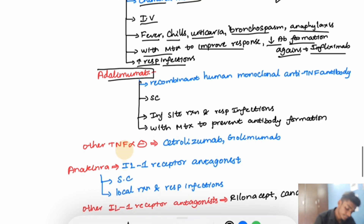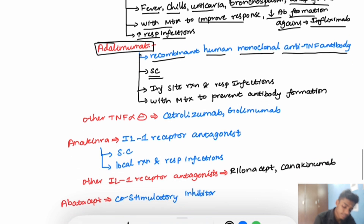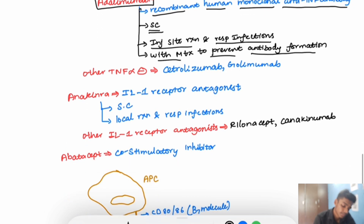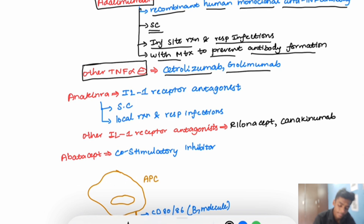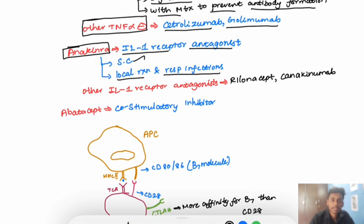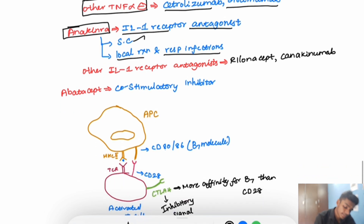Adalimumab is a recombinant human monoclonal anti-TNF antibody given by subcutaneous route. Adverse effects include injection site reactions and respiratory infections. Methotrexate is used alongside to prevent antibody formation against adalimumab. Other TNF-alpha inhibitors include certolizumab and golimumab. Anakinra is an interleukin-1 receptor antagonist given by subcutaneous route; its adverse effects are local reactions and respiratory infections. Other IL-1 receptor antagonists include rilonacept and canakinumab.